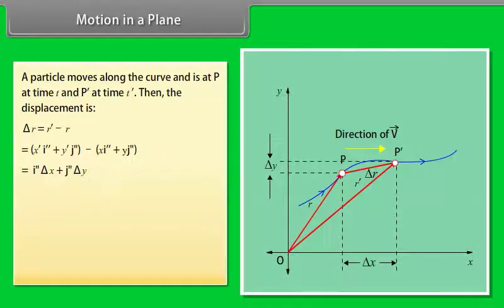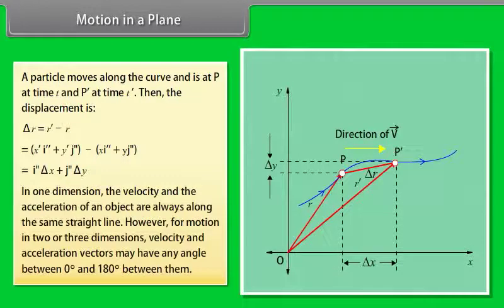In one dimension, the velocity and the acceleration of an object are always along the same straight line. However, for motion in two or three dimensions, velocity and acceleration vectors may have any angle between zero degrees and 180 degrees between them.